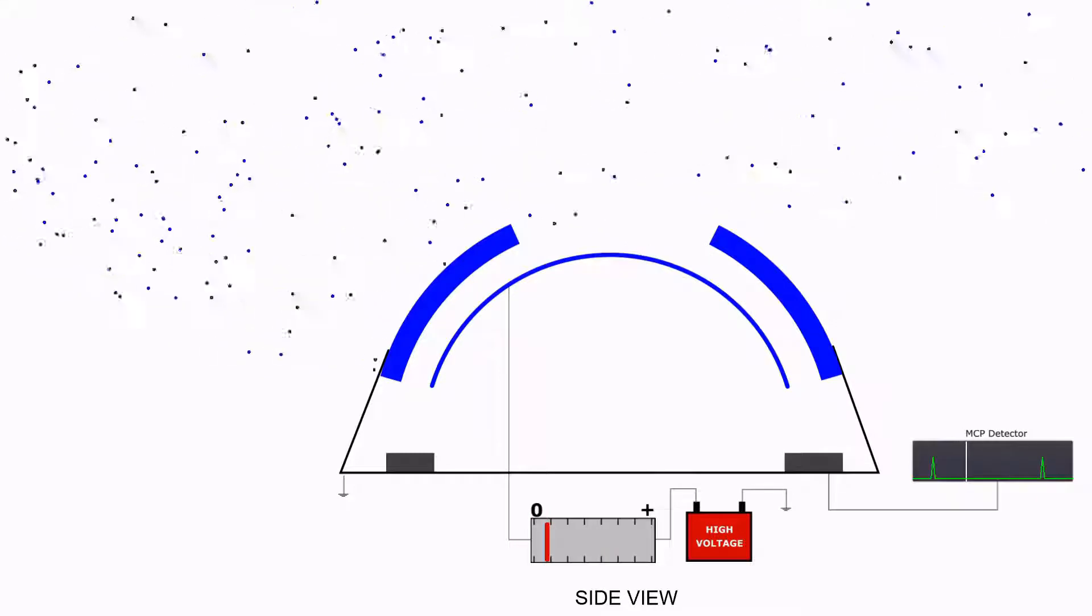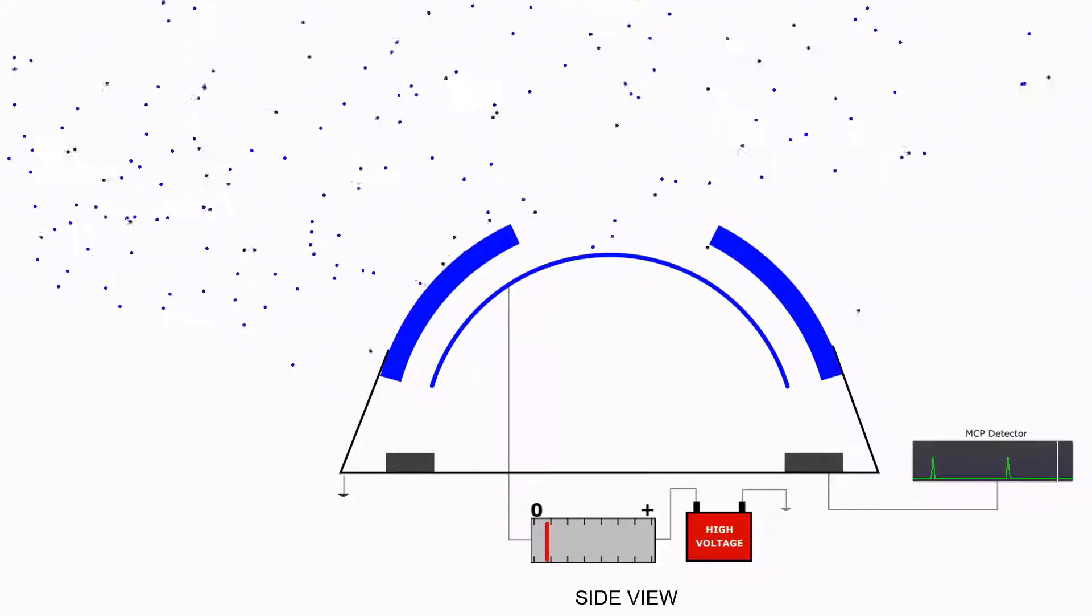This will allow the electron to move all the way down and hit the detector. Though not complete at this point, our device allows us to select for electrons of a specific energy level based on the input voltage on the inner hemisphere. This is a good start.